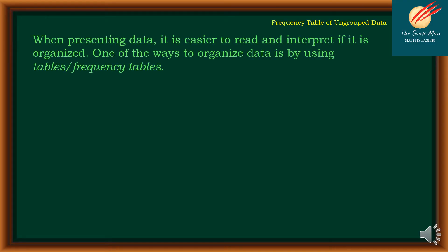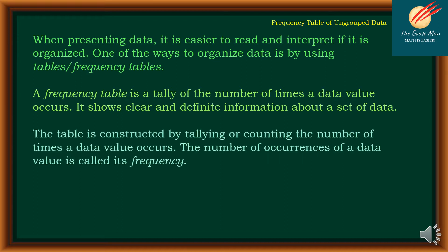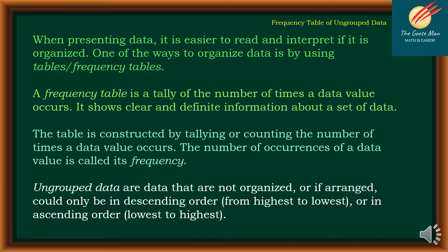When presenting data, it is easier to read and interpret if it is organized. One of the ways to organize data is by using tables or frequency tables. A frequency table is a tally of the number of times a data value occurs. It shows clear and definite information about a set of data. The table is constructed by tallying or counting the number of times a data value occurs. The number of occurrences of a data value is called its frequency.